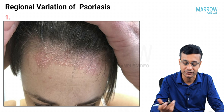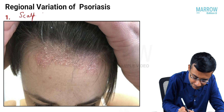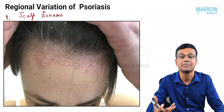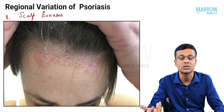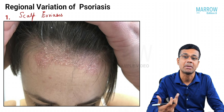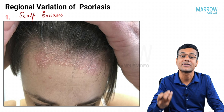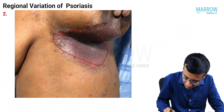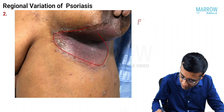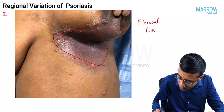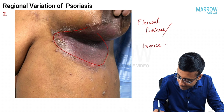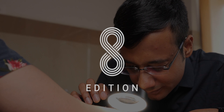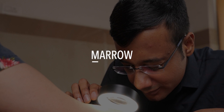Regarding regional variations: scalp psoriasis — remember that not all scaling on the scalp is dandruff; silvery white scales indicate psoriasis. Flexural psoriasis involves only the flexures and is also known as inverse psoriasis.